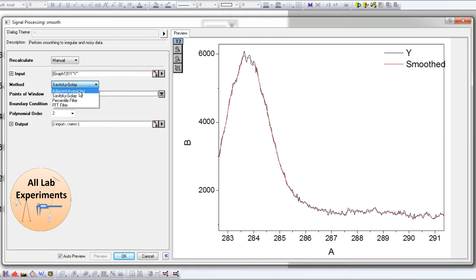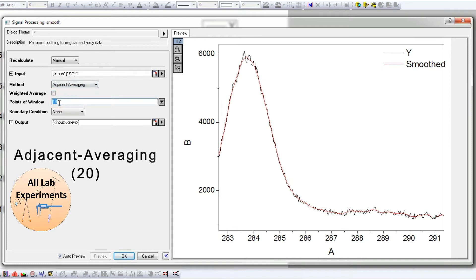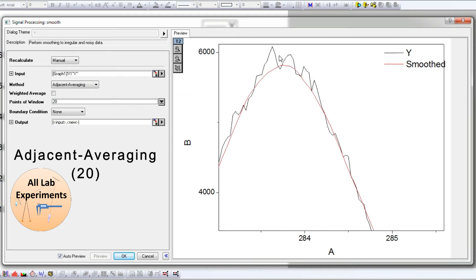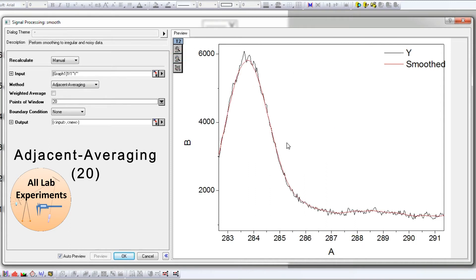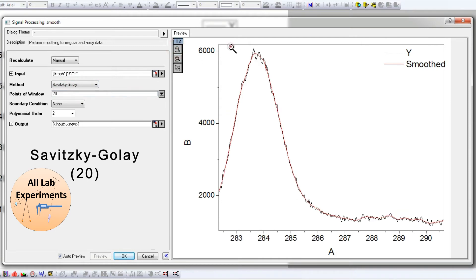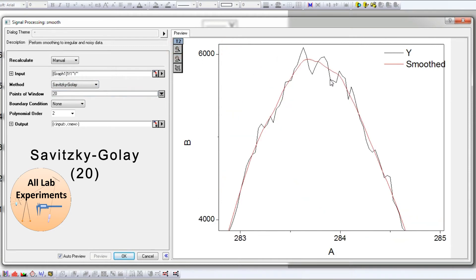Now for the same Adjacent Averaging, if I switch to 20, you will see that this peak is coming a little bit down from the original data. The smoothing process is OK only up to a limit, up to when you don't lose the information out of your data. This is getting off in this case.